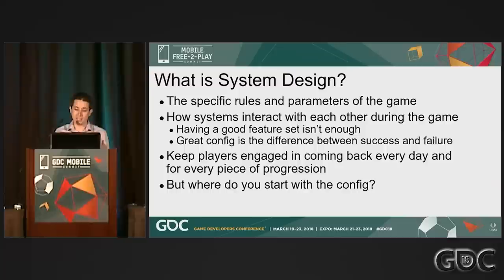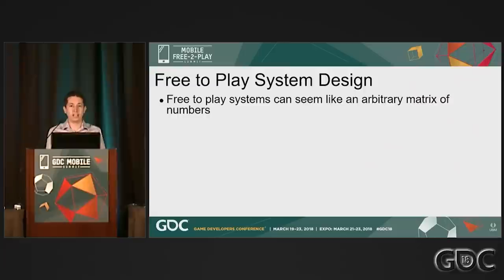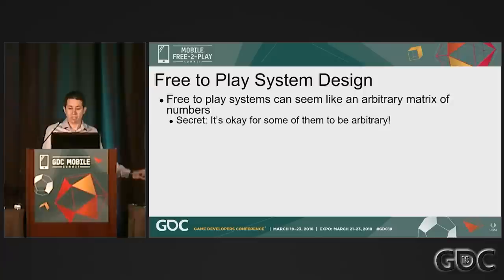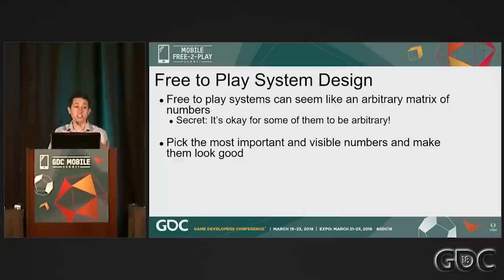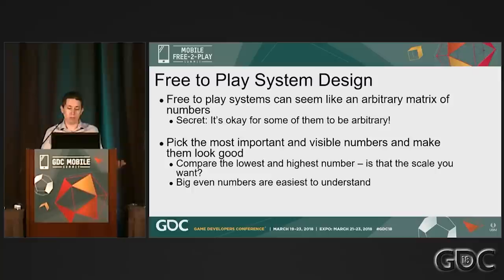The question then is where do you start? How do you put that first number in the game? Free-to-play games can seem like a whole lot of arbitrary numbers, and sometimes they are — and that's the first secret: it's actually perfectly okay. Every system starts somewhere and you can't tune to something that doesn't exist. So we're going to pick the most important and visible numbers to players and try to make them look and feel good. Put yourself in the mind of a player in your game and ask yourself how something feels. You upgrade your sword and you get a plus 0.025 attack which rounds down to zero in your UI — that's not the best experience.